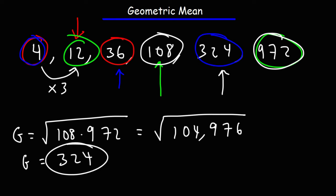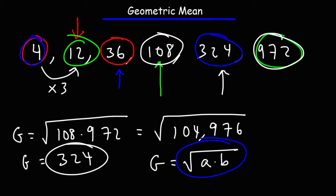So that's basically it for the geometric mean. Now you know how to find it. Just keep in mind the formula: it's simply the square root of the product of the two numbers, and it's the middle number between the two numbers in a geometric sequence.